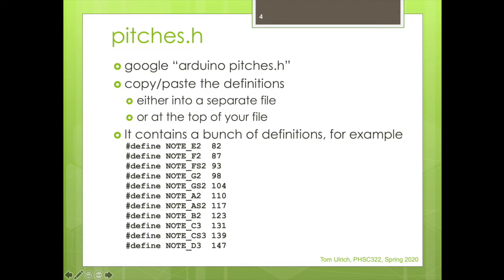Anyway, what it is, it's just a bunch of definitions. So it's a pound define. So what this is saying, for instance, is that the E in the second octave is 82 hertz. And the F in the second octave is 87 hertz. And the F sharp in the second octave is 93 hertz. And so on. It's just all the way there from octave two to octave, I think it's eight.